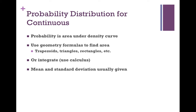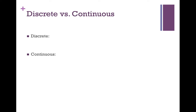The mean and standard deviation for a continuous distribution will be given — I won't ask you to find them because they involve calculus. An important distinction between discrete and continuous: in a discrete distribution, the probability that x is less than 2 is different from the probability that x is less than or equal to 2. For example, purchasing less than 2 items (0 or 1) is different from less than or equal to 2 items (0, 1, or 2). In a continuous distribution, these are the same, because probability corresponds to area — the area less than 2 equals the area less than or equal to 2. In a continuous distribution, we never calculate the probability at one specific point.